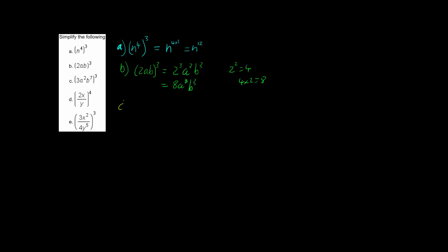Now we have part c: 3a squared b to the 7, all cubed. This is a combination of the fifth index law and the fourth index law. We deal with the fifth index law first — raise everything to the power outside the brackets — giving us 3 cubed, times a squared cubed, times b to the 7 cubed.